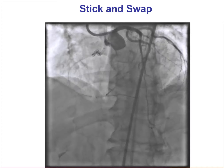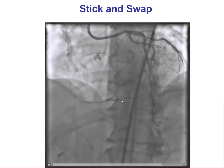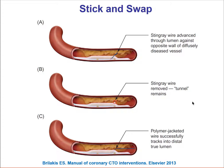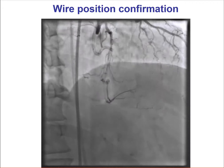As a result, we performed a blind stick and swap. By doing that, we were able to advance a Pilot 200 guidewire into what appears to be a branch of the PDA. The stick and swap technique involves using the Stingray wire, which is very stiff, to enter the distal true lumen — but the wire may exit into the subintimal space on the opposite wall. Instead, we remove the Stingray guidewire and advance a polymer guidewire such as a Pilot 200, which is more likely to track into the distal true lumen — and that is exactly what we did.